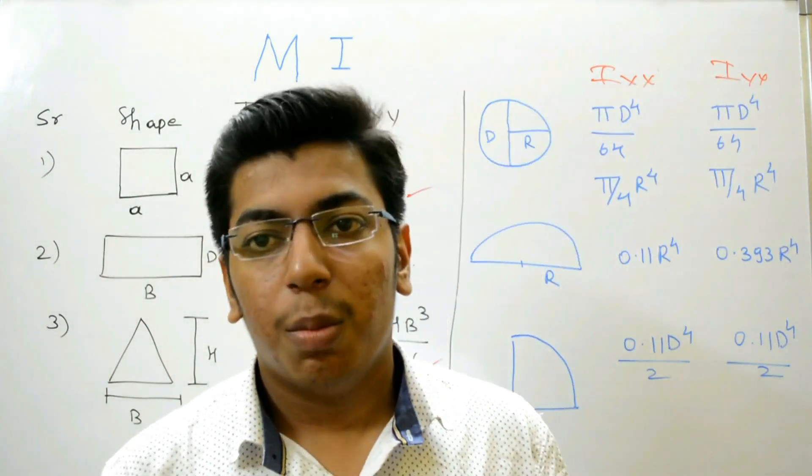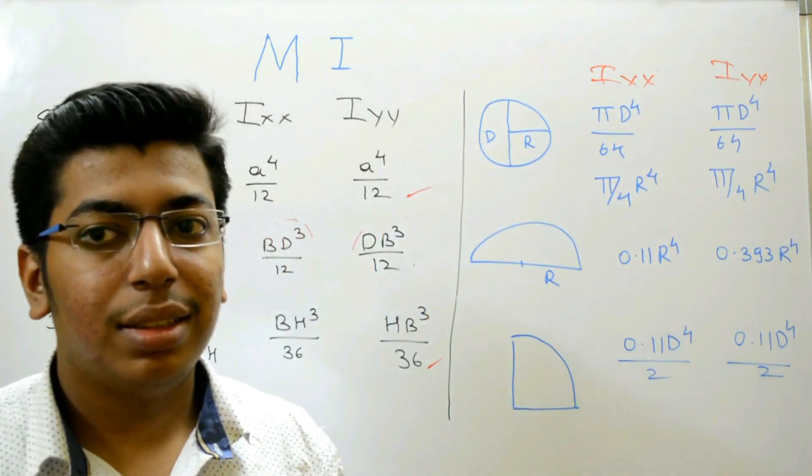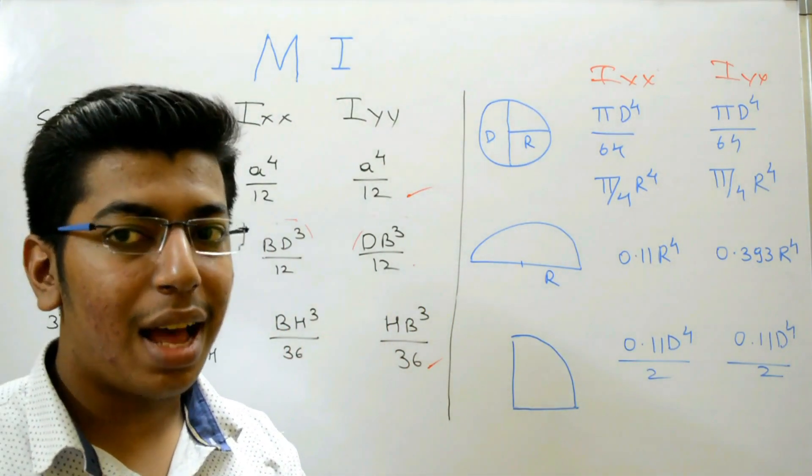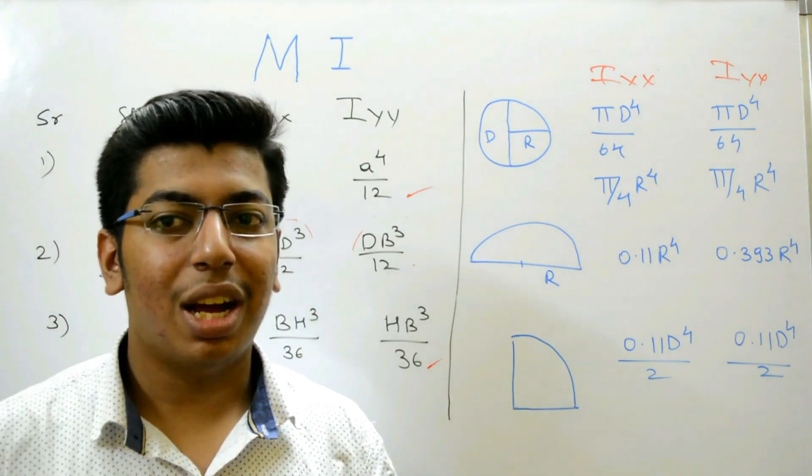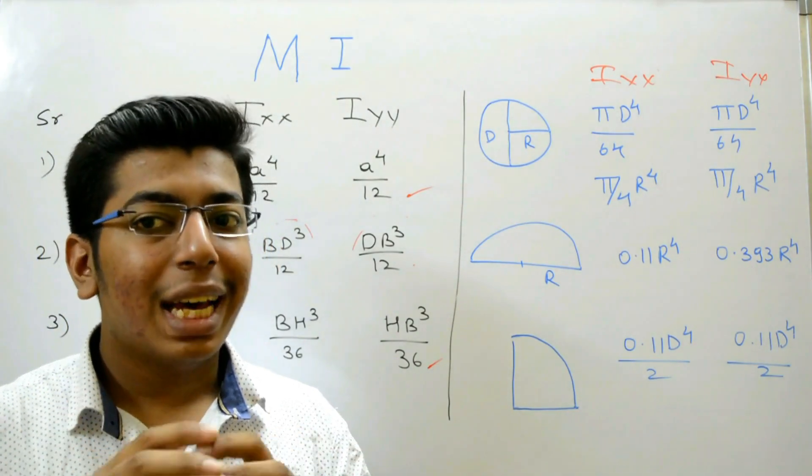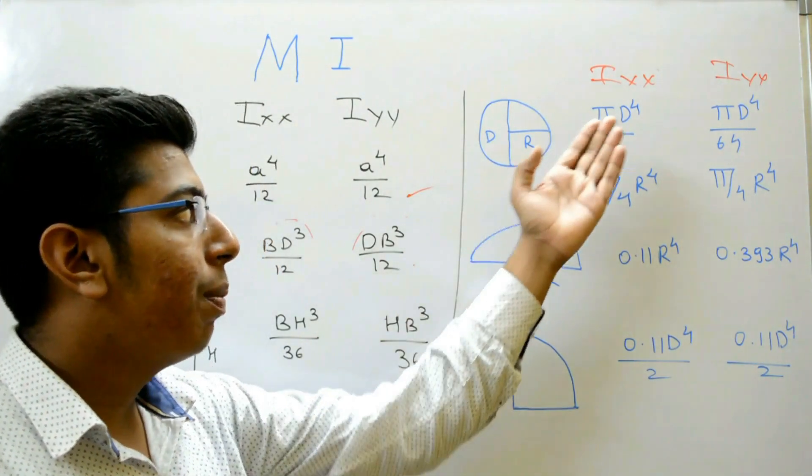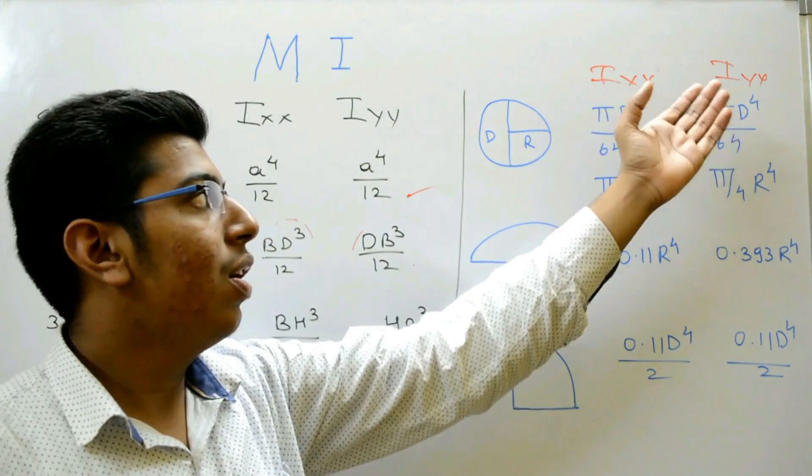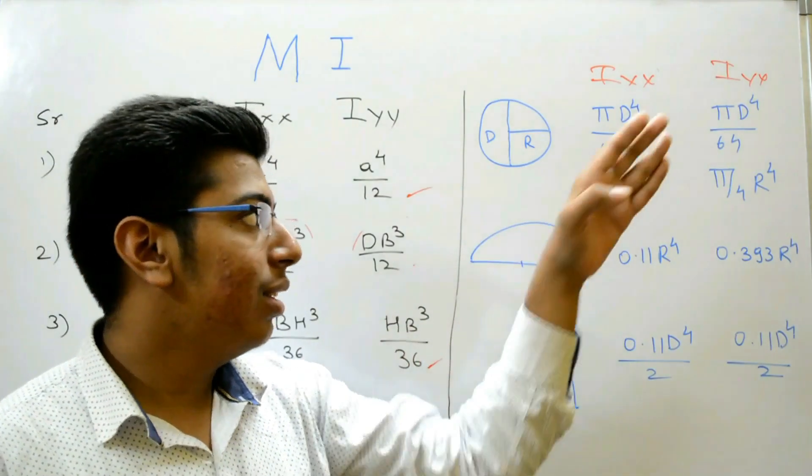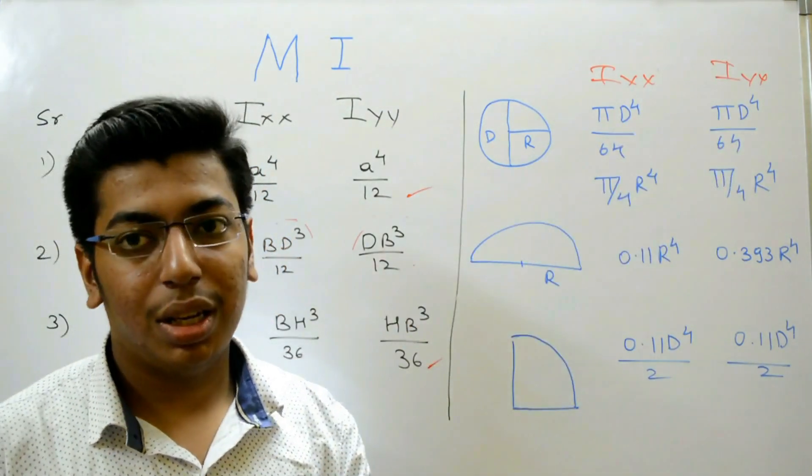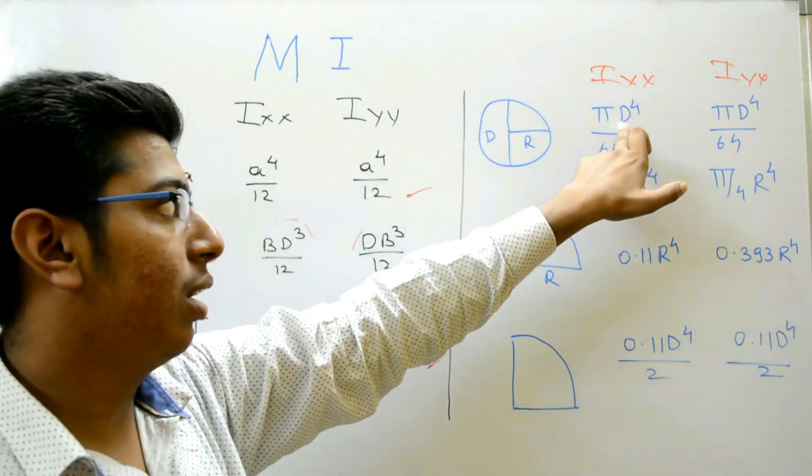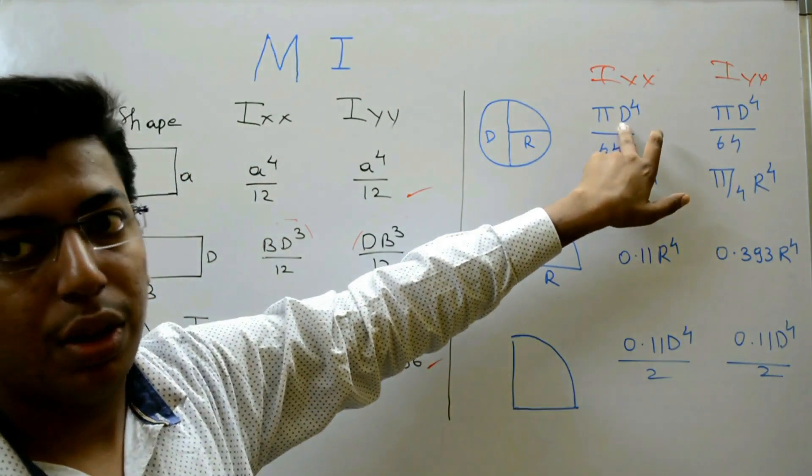Moving further, our next shape is circle, having diameter D and radius R. The moment of inertia of the circle along x-axis is pi D raised to 4 upon 64 and the moment of inertia along y-axis is pi D raised to 4 upon 64. Here it is D, it is D, it is not R.